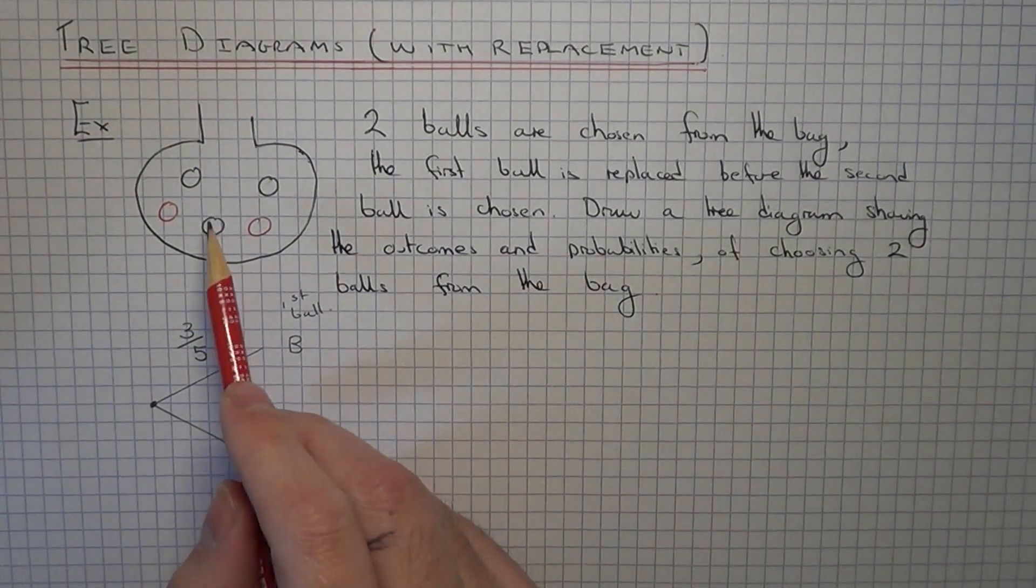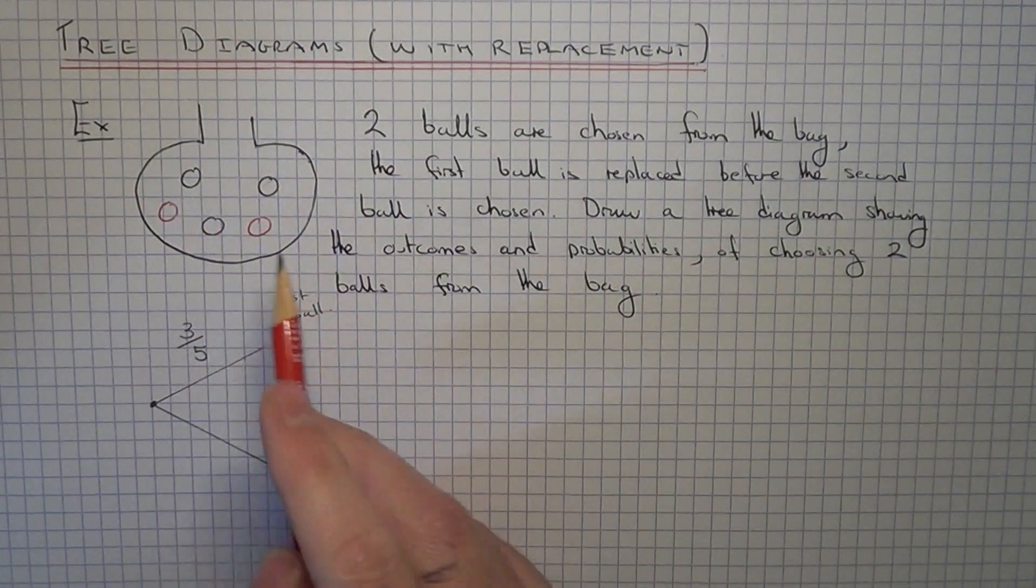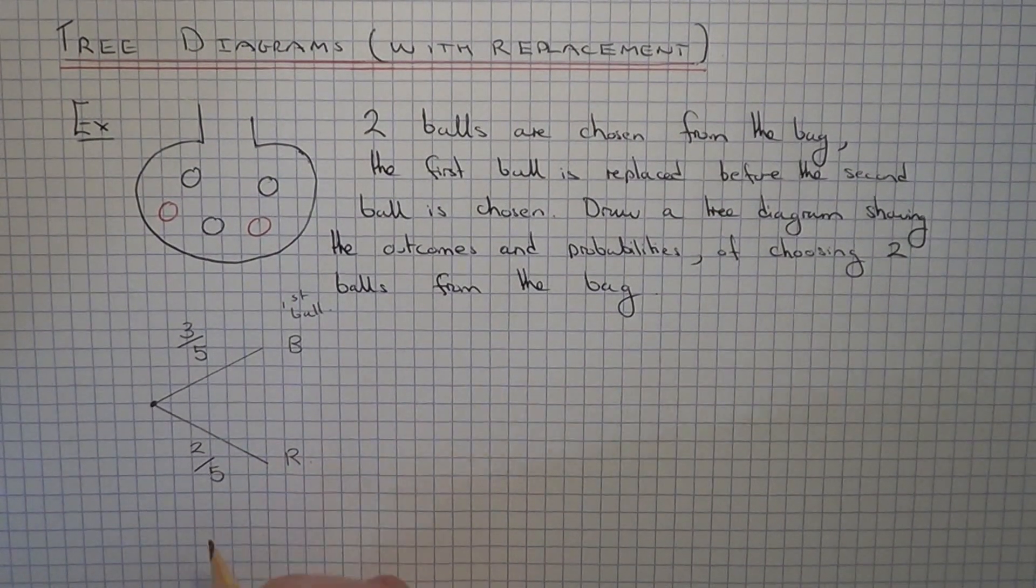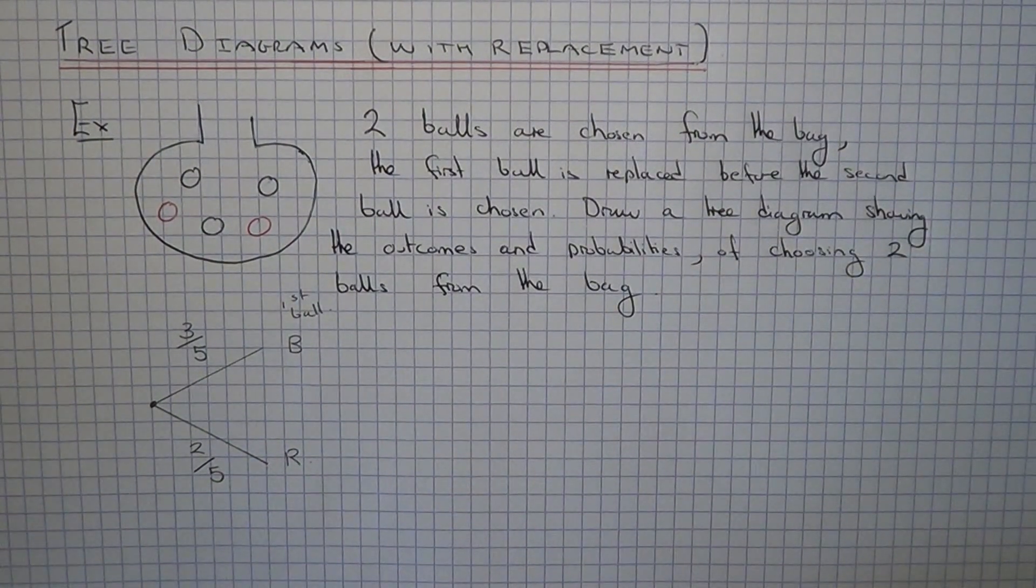And for a red ball, the probability of picking a red ball will be 2/5. Okay, so these are our branches for our first ball.